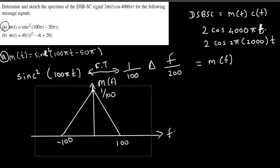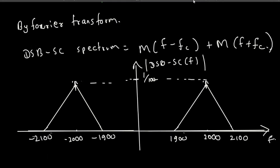That's how we draw the diagram — that's how we determine and sketch the spectrum of the DSB-SC signal 2m(t)cos(4000πt). I hope you guys found this video helpful. Thanks for watching, don't forget to subscribe to my channel, and see you guys in my next video.